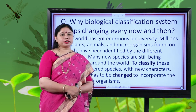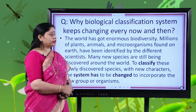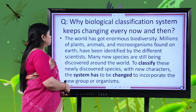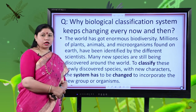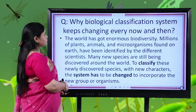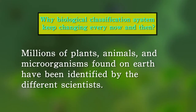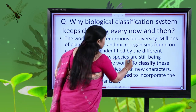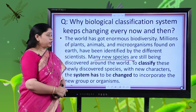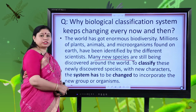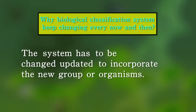You will learn about all these types of classification in the next chapter. Returning to the question: why does the biological classification system need to change? Our world is full of a variety of living organisms, and millions of plants, animals and microorganisms found on earth have been identified and given proper biological names. But new species are still being discovered, and new characteristics of these species are being found. So to classify newly discovered species with new characteristics, the system needs to be updated regularly to incorporate new groups of organisms.